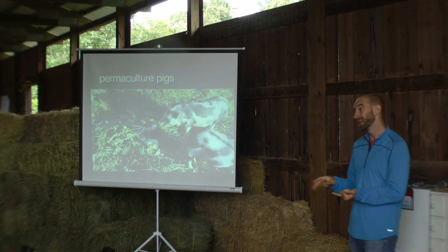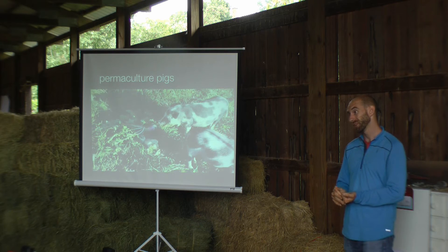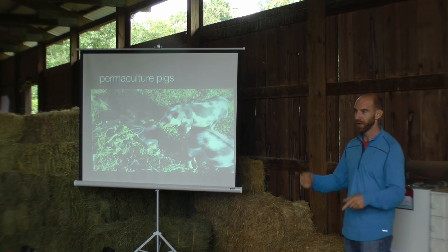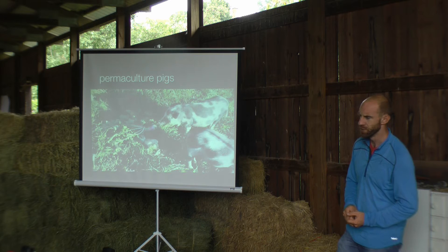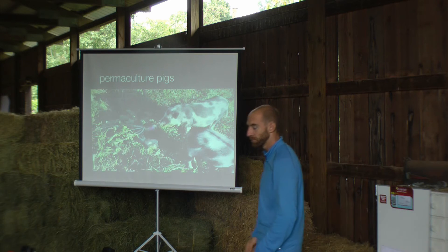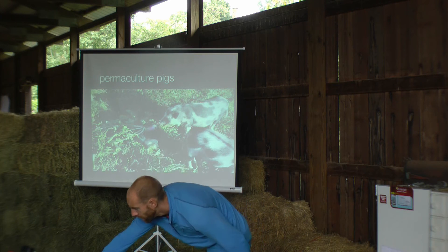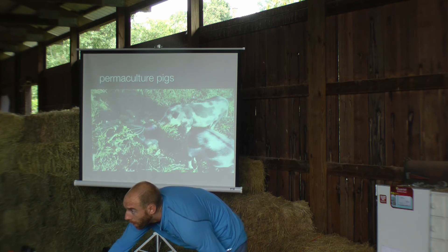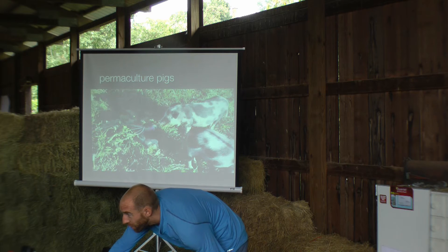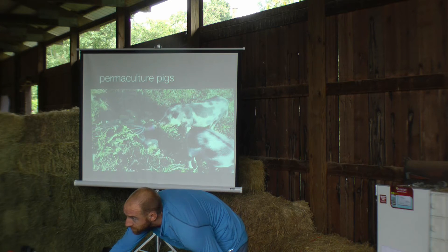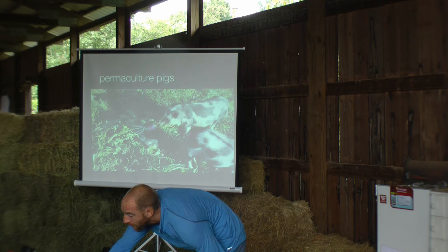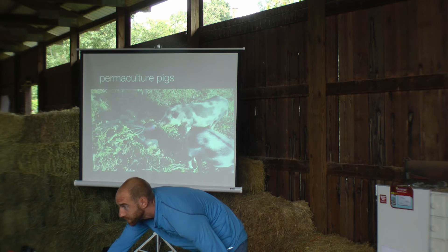It takes about 45 to 60 days to get a turnip to a reasonable size, maybe a little longer. So you can revisit that paddock and they've got a root crop right there too. The pigs are usually in the alleyways of the tree rows — electric fence keeps them trained away from the trees. Premier One quick fence, about 30 inches tall.